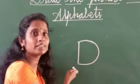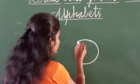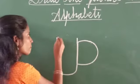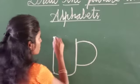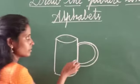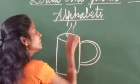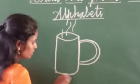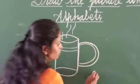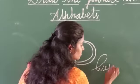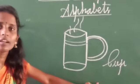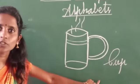Next alphabet D. What is this? This is tea cup. This is tea cup. This is cup. It is used to drink a tea.